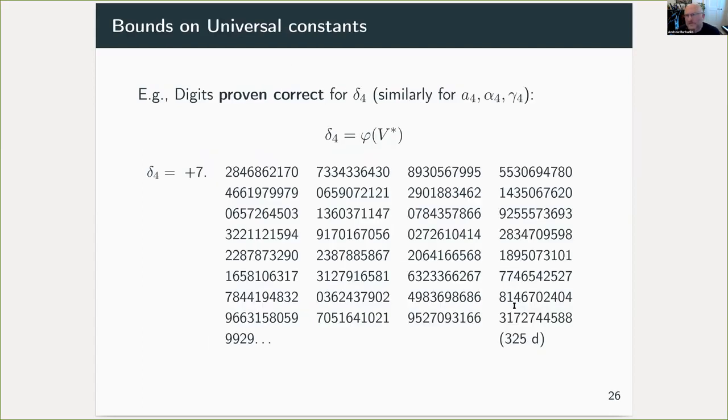A side effect of this, of course, is that we're able to prove, probably for the first time I think, that certain digits of these universal constants are definitely correct. There are many numerical computations of these. This method gives us rigorous digits, for example, 325 in this case for delta.